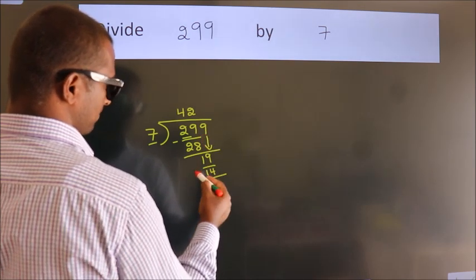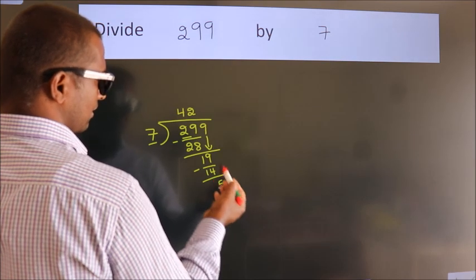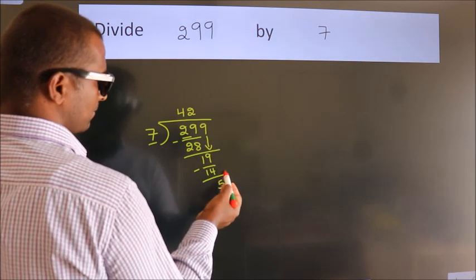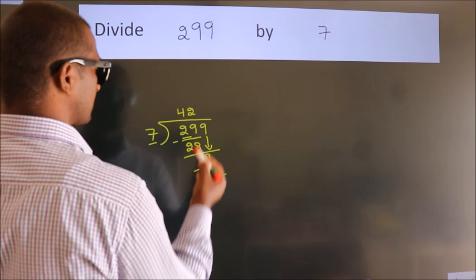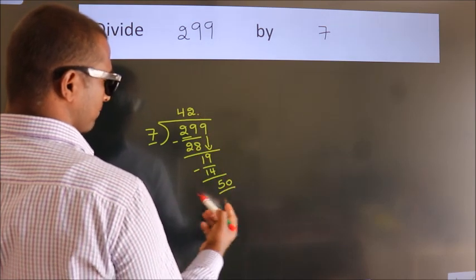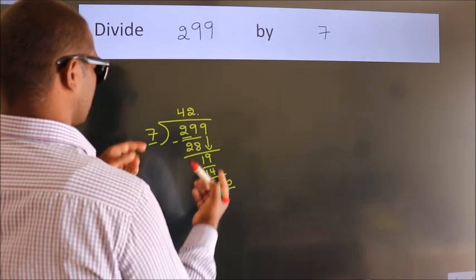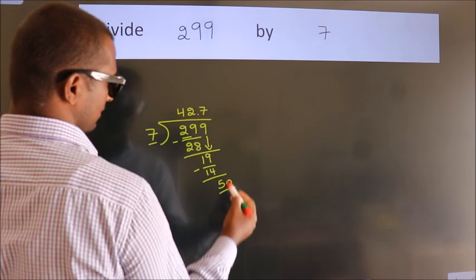Now we subtract. We get 5. After this, no more numbers to bring it down. So what we do is we put dot take 0, so 50. A number close to 50 in 7 table is 7 sevens 49.